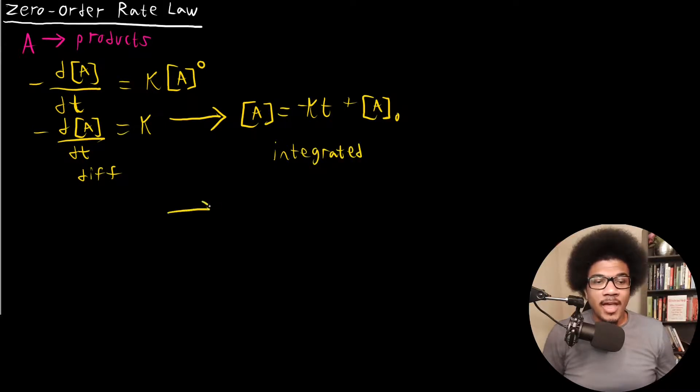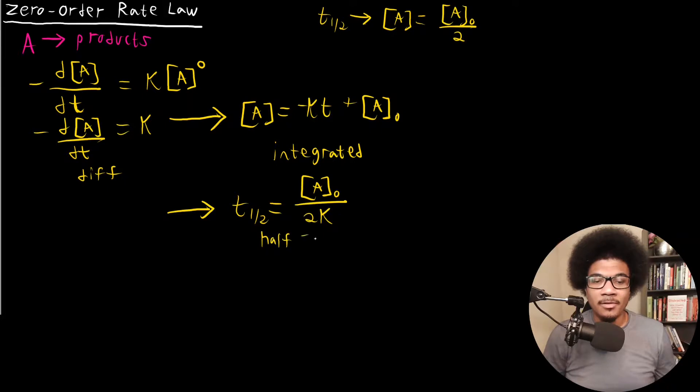And in order to get the half-life expression, at T1/2, we know that the concentration of A will be equal to one half the initial concentration of our reactant. So when you do that and do some algebra with that expression, you get T1/2 is equal to the initial concentration over two times K. So then this will be your half-life expression.